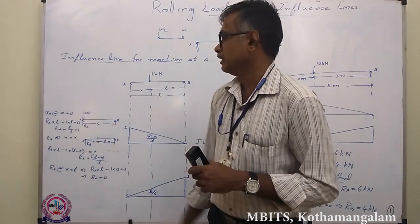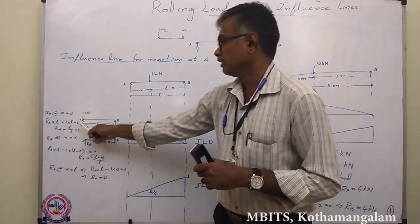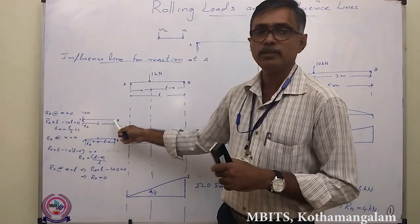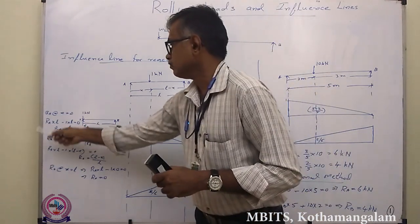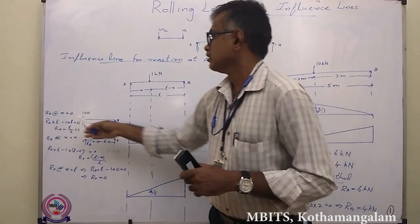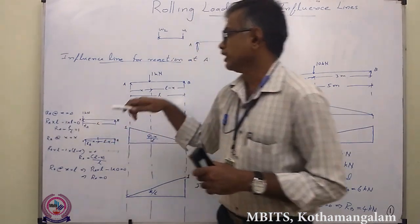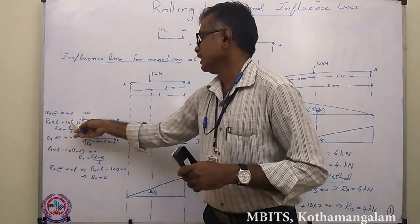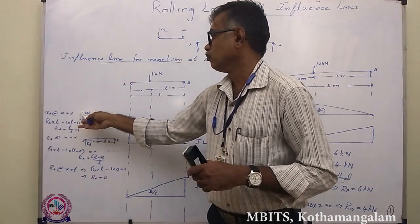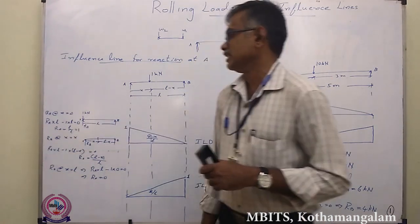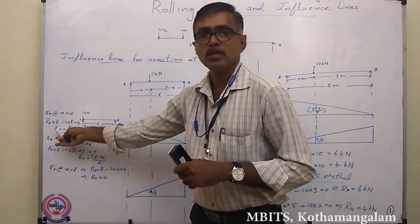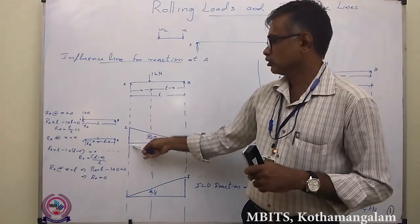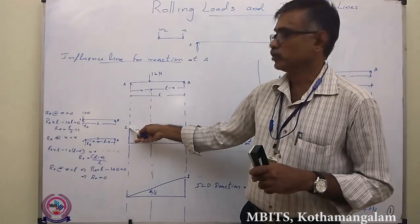To calculate the reaction at A, we take moments about B of all the forces and equate to zero. Taking clockwise moments as positive and anticlockwise as negative: RA × L − 1 × L = 0, giving RA = L/L = 1. This ordinate of 1 is plotted on the influence line diagram at point A.